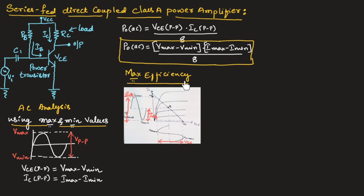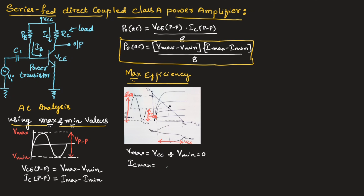Now let us understand the maximum efficiency of class A power amplifier. Considering the characteristics, IC_min equals 0 and IC_max equals 2·ICQ, while V_min equals 0 and V_max equals VCC. For maximum efficiency, V_max equals VCC, V_min equals 0, I_max equals 2·ICQ, and I_min equals 0.